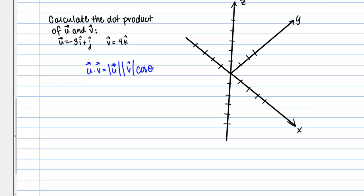Let's start by thinking about what the vector U looks like in this space. Vector U we have negative 3i plus j. That tells us, first of all, that we're just in the X, Y plane. There's no Z component of that vector. I've moved negative 3 units in the X direction and one unit in the positive Y direction.